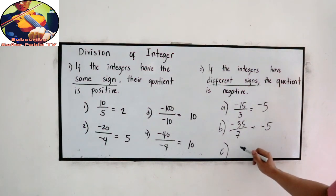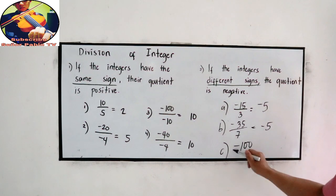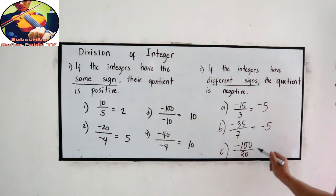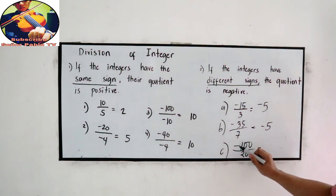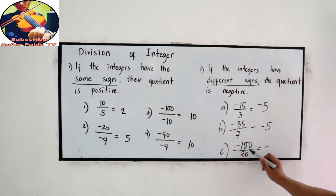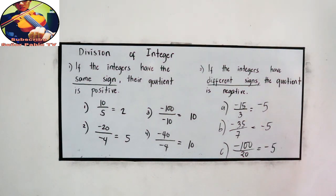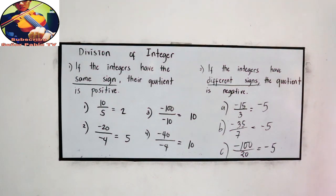And letter C: negative 100 divided by, let's say, 20. So that is negative divided by positive — 100 divided by 20 is 5, so the answer is negative 5.